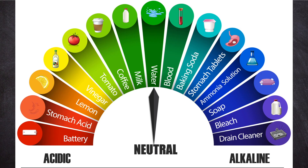I will explain with a diagram how acidity and alkalinity work. For example, battery acid is acidic. Vinegar, tomato, coffee, and milk are also acidic. Water is neutral. After that, blood, baking soda, stomach tablets, ammonia, soap, bleach, and drain cleaner are all alkaline.